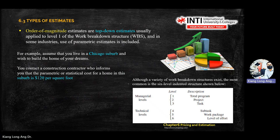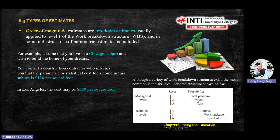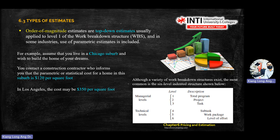For example, if you live in Chicago and want to build your dream home, you contact a construction contractor, and the statistical cost of a house in that area is $120 per square foot. In Los Angeles it can be double or triple the price. This is an example of order of magnitude — you compare based on location and statistical data. Each region has its own estimates. Similarly, each type of car has a price range — a sports car has a minimum starting price.